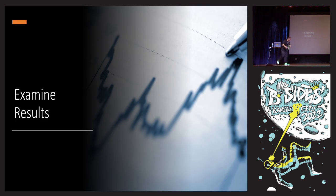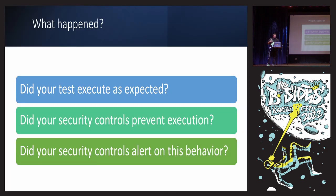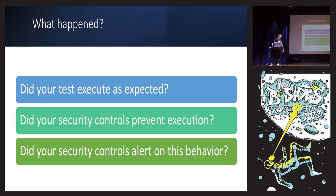Once you've executed your test, now you need to examine those results. You need to make sure the expected outcomes occur. Ask yourself: did your test execute? Did you prevent it? Did you get an alert? These questions are pretty self-explanatory, but you still need to ask yourself and look into them. Security is not going to be solved in a day, so there is some manual work involved. If you don't see anything and nothing happened, that's not good.